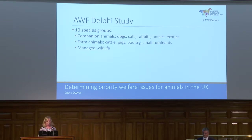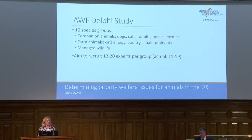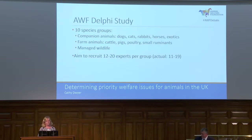We also focused on animals in the UK specifically. Our aim was to recruit between 12 and 20 experts per group — most studies suggest better reliability around that number without becoming too unwieldy. In actuality, we recruited between 11, which was our rabbit group, and 19, which was our horse group, so we were pretty close to where we were aiming.